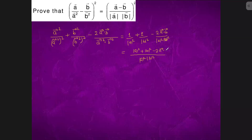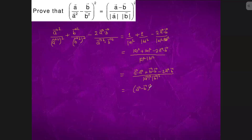So what we can write is (a vector · a vector)(b vector · b vector) upon |a vector||b vector|. This can be written as (a vector minus b vector)² upon |a||b| whole squared. This is proved.